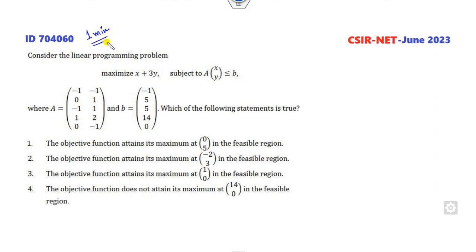Look, if I read this statement, there is one problem of maximization. All the constraints have a less than or equal to sign. The options are: objective function attains its maximum at this, maximum at this, maximum at this, does not attain maximum at this.